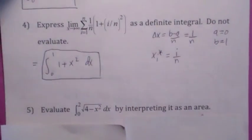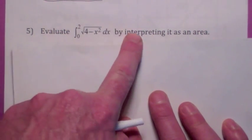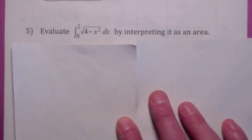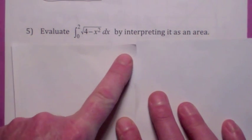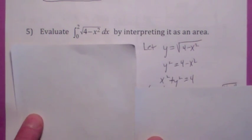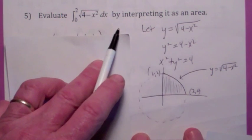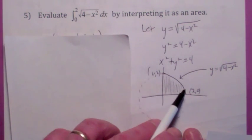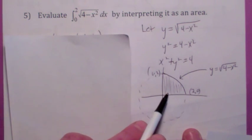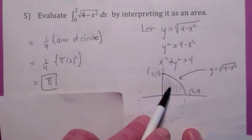How about this one? The hint says evaluate this integral by interpreting it as an area. If you let y equal the square root of 4 minus x squared, squaring both sides and adding x squared, you realize this is the equation for a circle: x squared plus y squared equals 4. Looking at it graphically, this is the top half of the circle. From 0 to 2, it's just a quarter of the circle. So it's one-fourth the area of the circle, one-fourth of 4 pi, which is just pi.